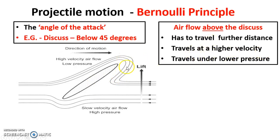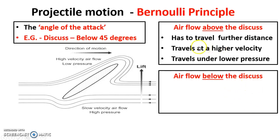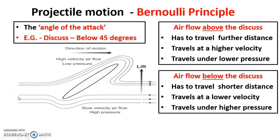Now let's look at the airflow below the discus. Compared to the air above the discus, the air below has to travel a shorter distance. That means it has to travel at a lower velocity. Because the velocity is lower, the pressure is higher — it has more space to work in. It presses on towards the discus. Now, as we know, air travels from an area of high pressure to low pressure. The air traveling at higher pressure below the discus moves to an area of low pressure above the discus, which causes lift and allows the discus to propel forward and go in that non-parabolic flight path.